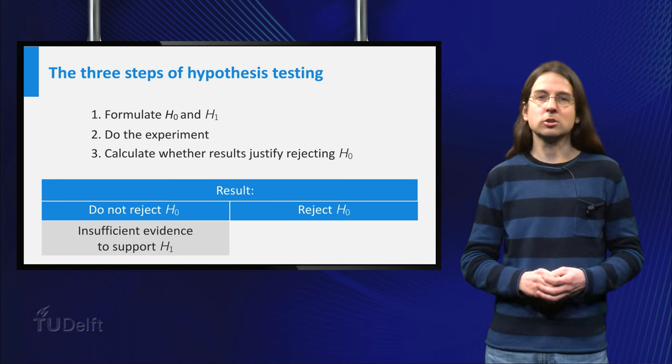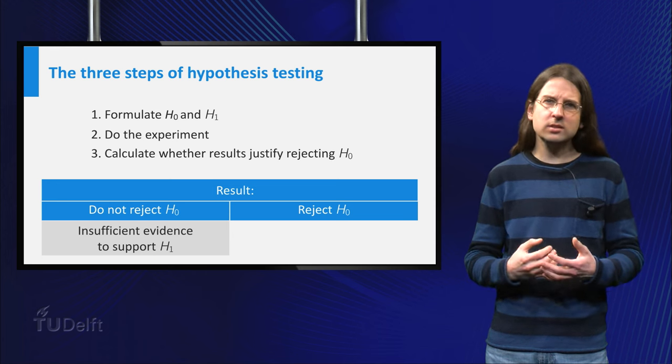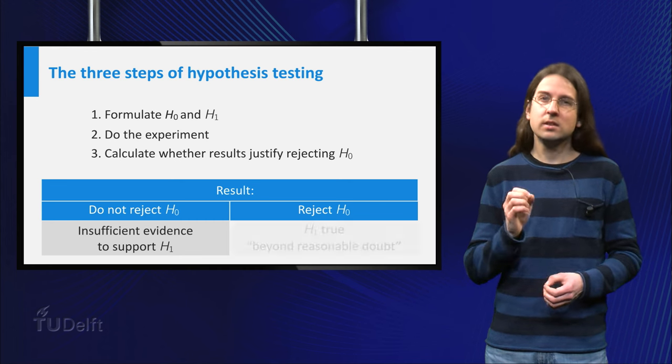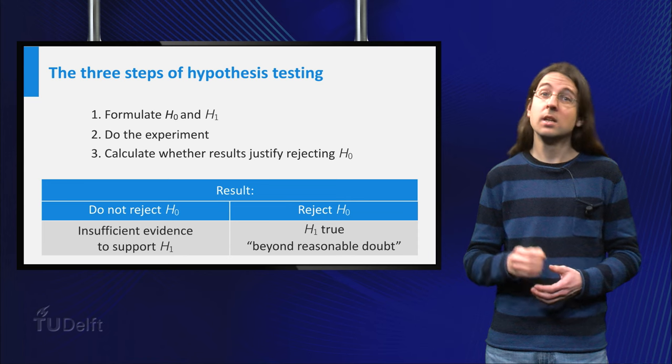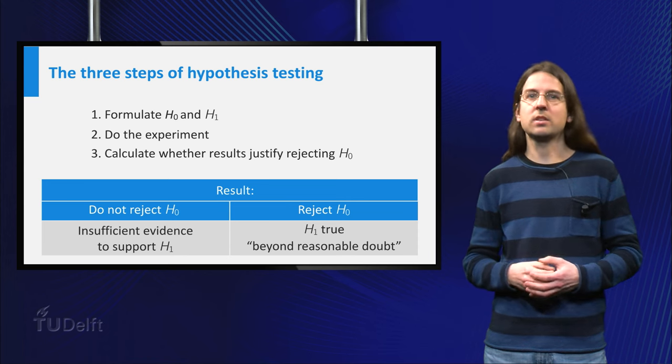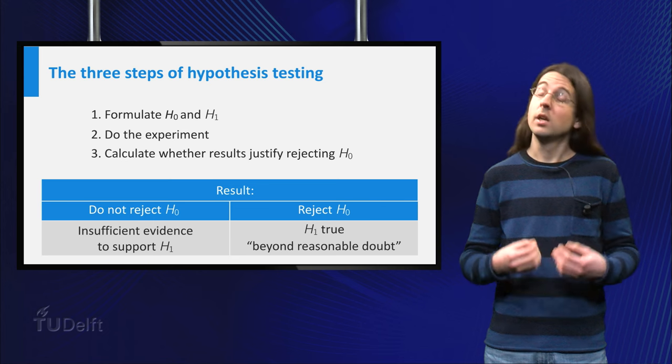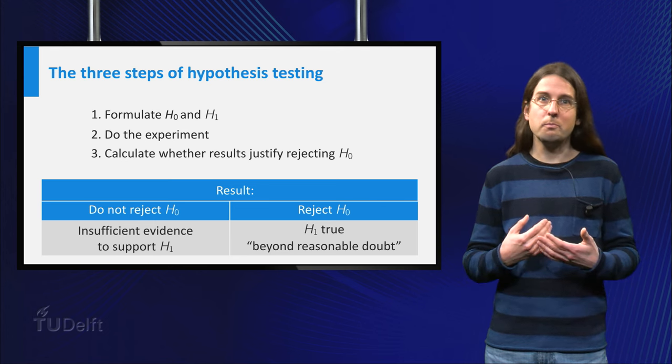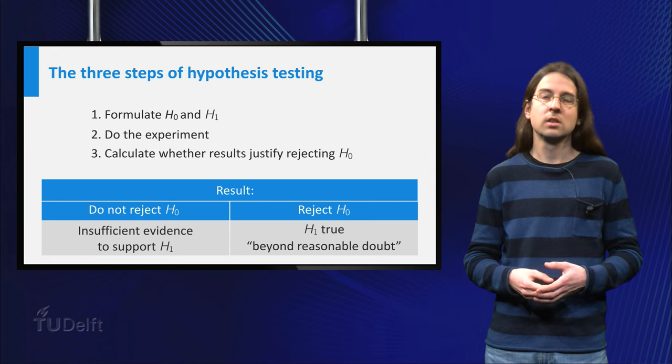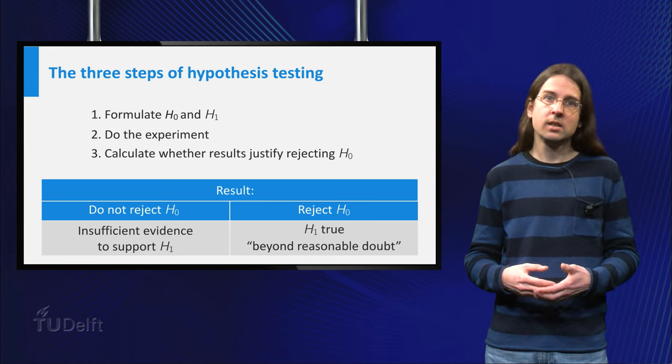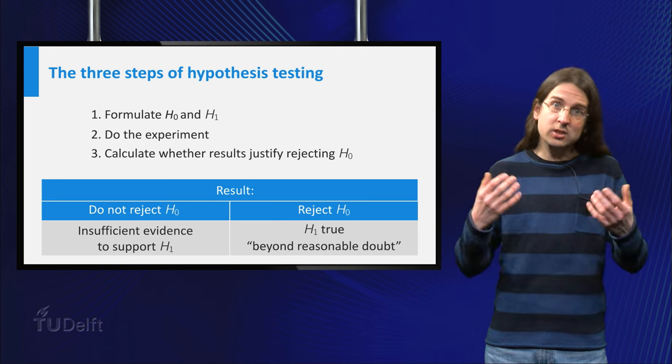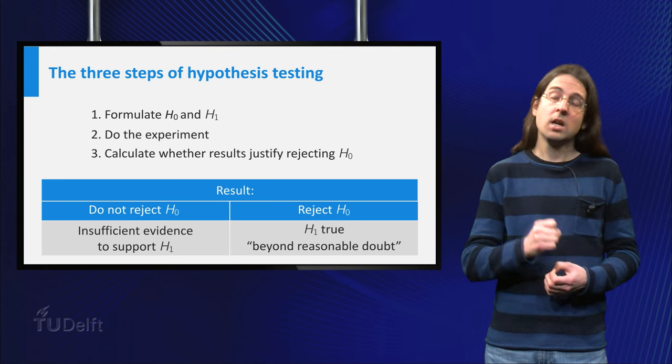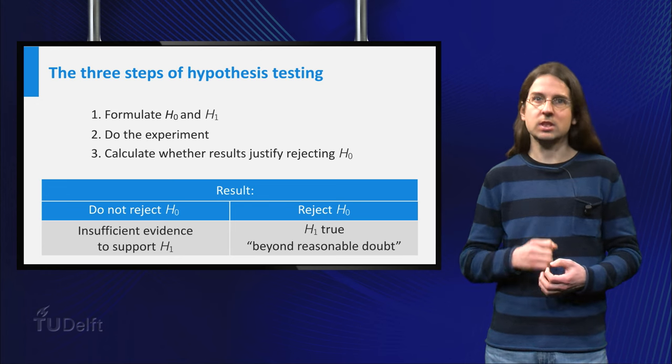Only if the results are so outlandish that the odds of them happening if H0 were true are very small, then we reject H0 and conclude that H1 is likely valid. In this case, evidence for H1 consists of many warm months. Thus we would make a rule saying, if there are at least X warm months in 2014, then we reject H0, otherwise we do not reject H0.